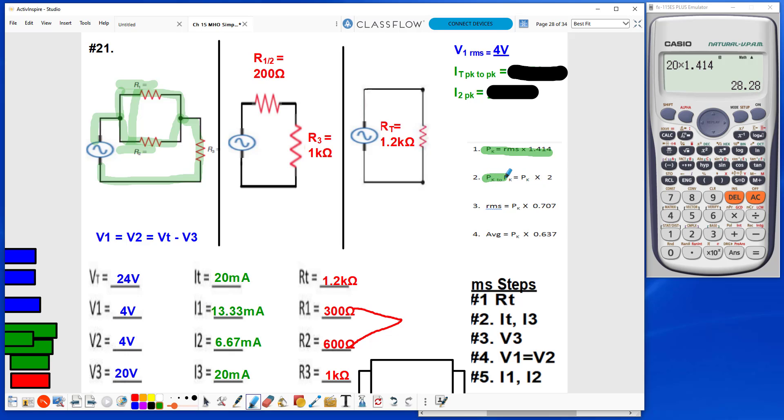If I want peak to peak, I have to take the peak times 2. So I take this peak value times 2, equals 56.56 milliamps.